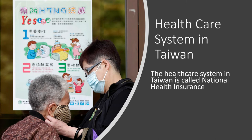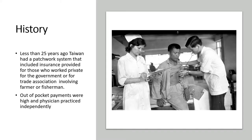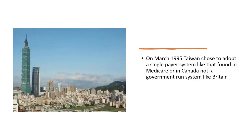Now coming to the healthcare system in Taiwan — it is called National Health Insurance. Less than 25 years ago, Taiwan had a patchwork system that included insurance for those who worked for the government or for trade associations involving farmers or fishermen. Out-of-pocket payments were high and physicians practiced independently. In March 1995, Taiwan chose to adopt a single-payer system like that found in Medicare or in Canada, not a government-run system like in Britain.